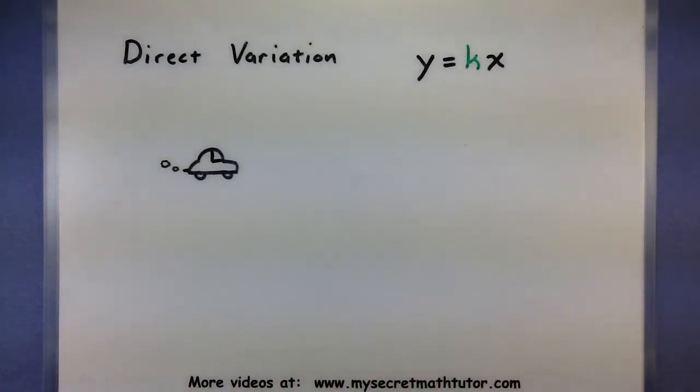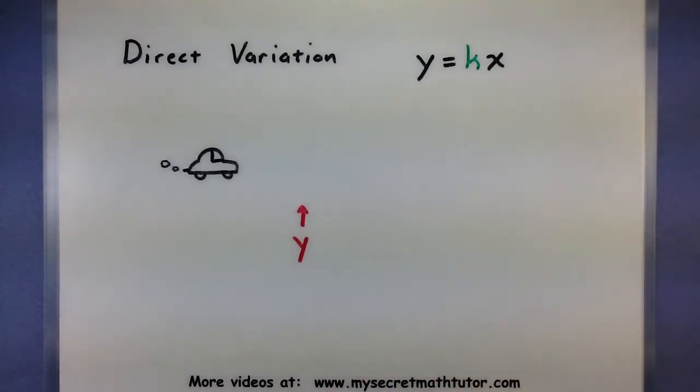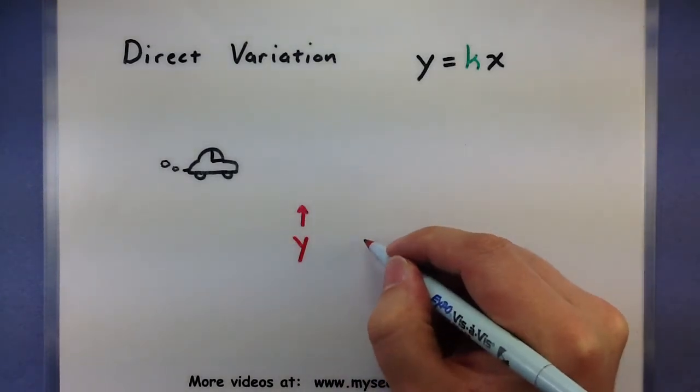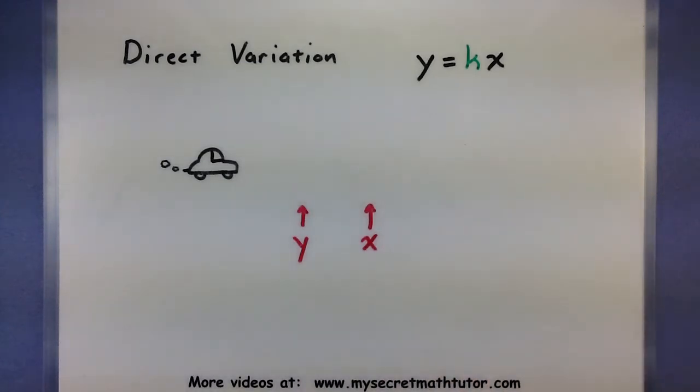Notice how the longer you drive, the further you go. So as one variable goes up, let's say like your y variable goes up, that's maybe your distance, then it's going to take a lot more time. You see, in direct variation both the variables are in a sense moving in the same direction. If one goes up, the other one goes up. And it also works when they're going down. So when one goes down, the other one goes down. So this is a very strong type of connection between the two.